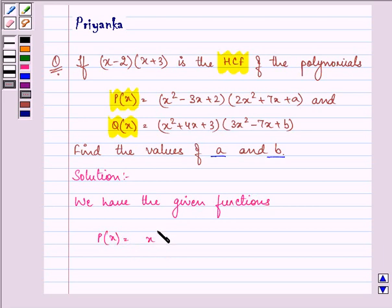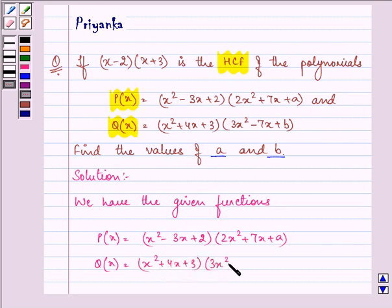P(x) = (x²-3x+2)(2x²+7x+a) and Q(x) = (x²+4x+3)(3x²-7x+b).